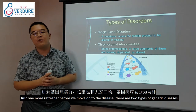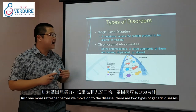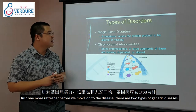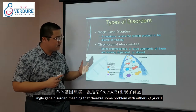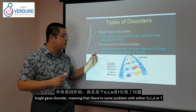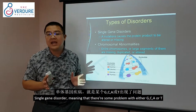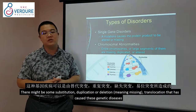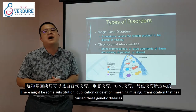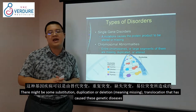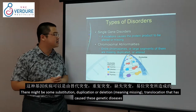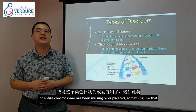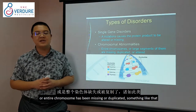Just one more refresher before we move on to the diseases. Genetic diseases can be categorised into two types: single gene disorders — where there are problems with G, C, A, or T, such as substitutions, duplications, deletions, or translocations — or disorders where an entire chromosome has been missing or duplicated.